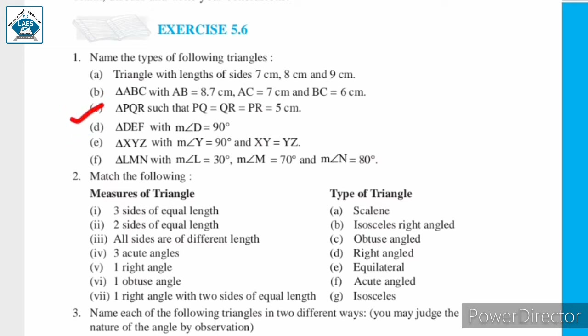Next, triangle PQR such that PQ = QR = PR = 5 cm. From the given data, we can say that all the sides of triangle PQR are equal — each side is 5 cm.